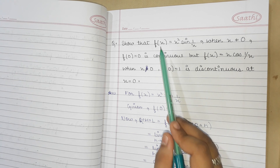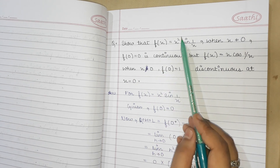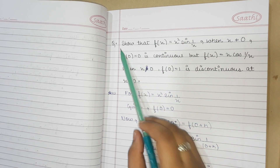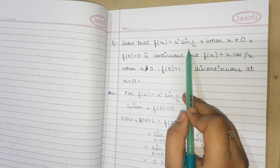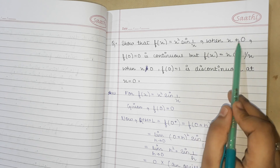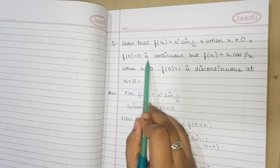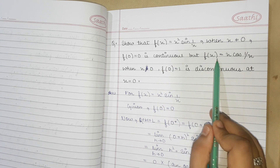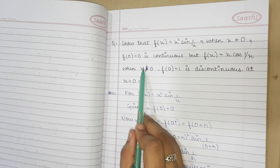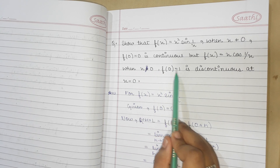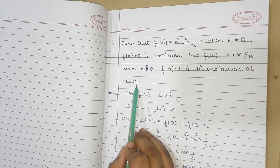One variable means f(x); if there are two variables then it is f(x,y). Now the question is: show that f(x) = x²·sin(1/x) when x ≠ 0, and f(0) = 0, is continuous. But f(x) = x·cos(1/x) when x ≠ 0, and f(0) = 1, is discontinuous at x = 0.